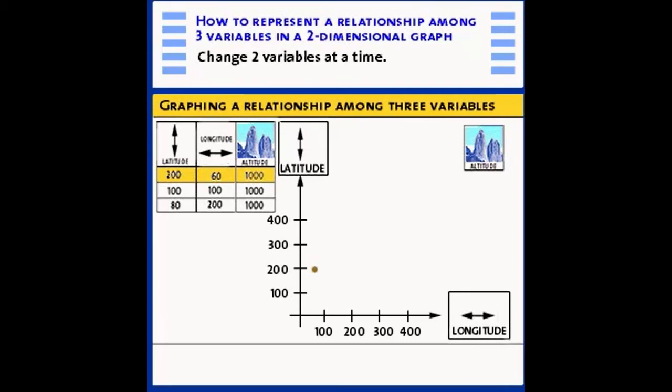With 100 and 100, we also get the same altitude. And finally, with 200 and 80, we get the same altitude. Each of these three dots represents a latitude and longitude combination with a constant altitude of 1,000. So what I can do to make it easier is I can connect all the points that have an altitude of 1,000 and label this curve 1,000.